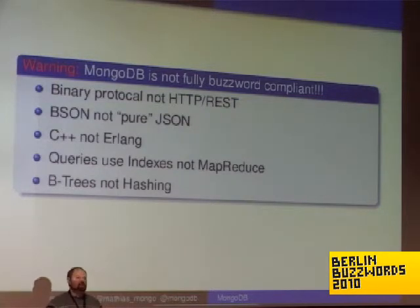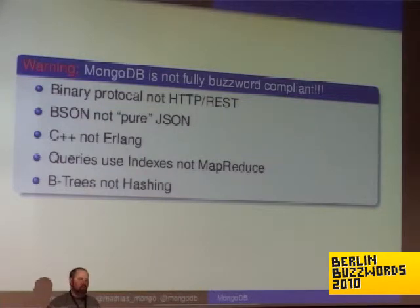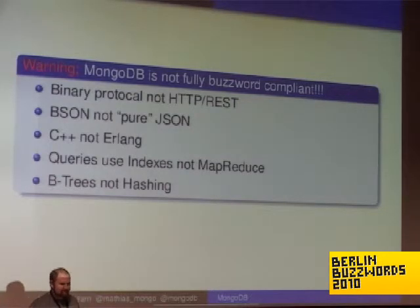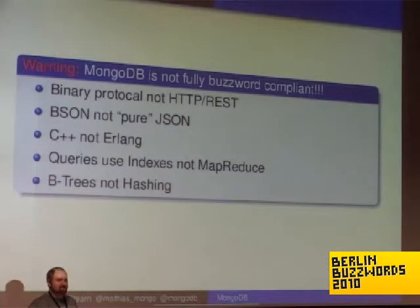We don't actually do hashing. The only time we do hashing is for authentication — we don't hash your data. We find that B-trees are nice because you can do range queries and all sorts of useful things.